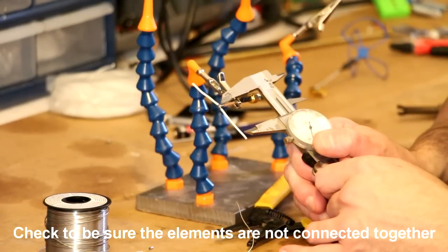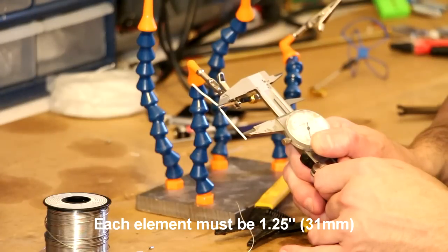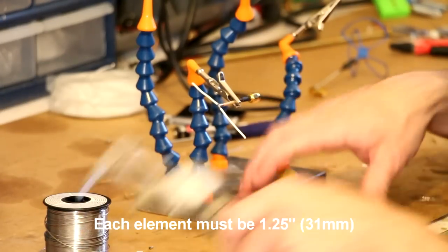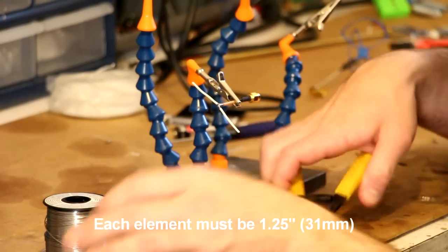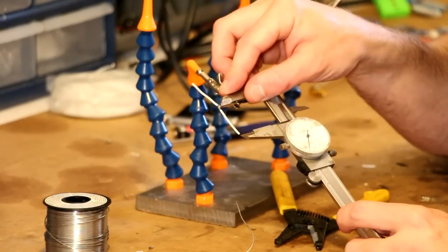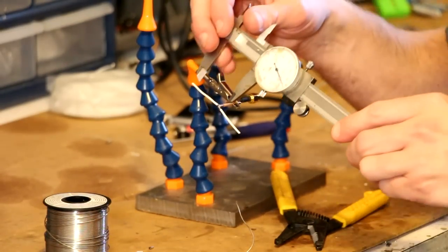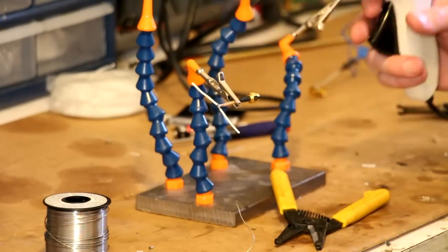Now comes the tuning part. Each element has to be exactly one and one quarter inches from the center to the tip. I'm using a caliper and trimming it off with a pair of wire cutters but a tape measure is usually sufficient. Both the active element, the center, and the counterpoise, which is the grounded end, must be the same length.